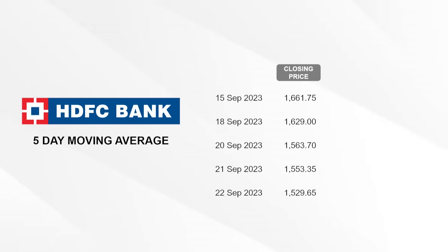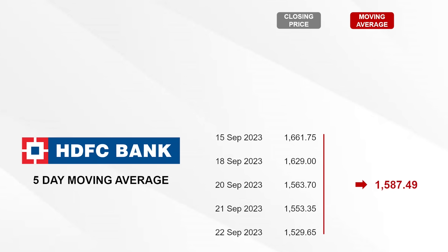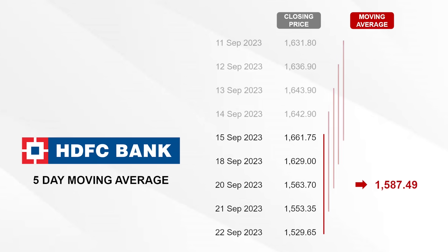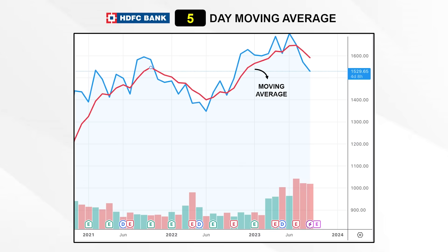As you might have guessed by now, over a period of time a pattern starts showing up. The same methodology can be applied on stocks. If I were to extract the five-day moving average for HDFC Bank, it's nothing but the average of the last five trading sessions, which as on 22nd of September 2023 comes to 1,587 rupees and 49 paise. Just like the number block example, we can continue going backwards in time and get a series of five-day moving averages, which when plotted on a chart looks something like this.